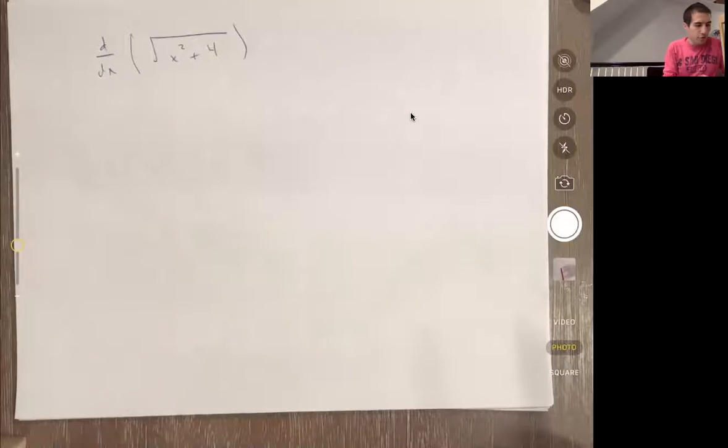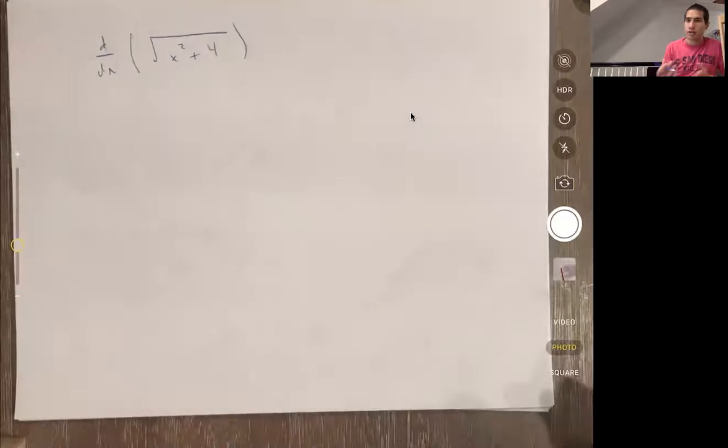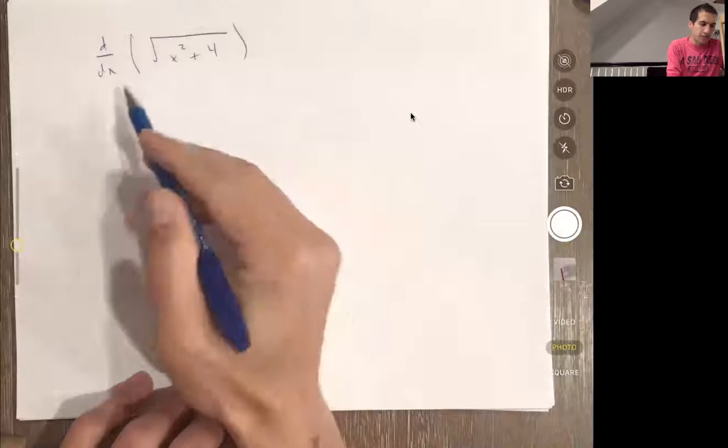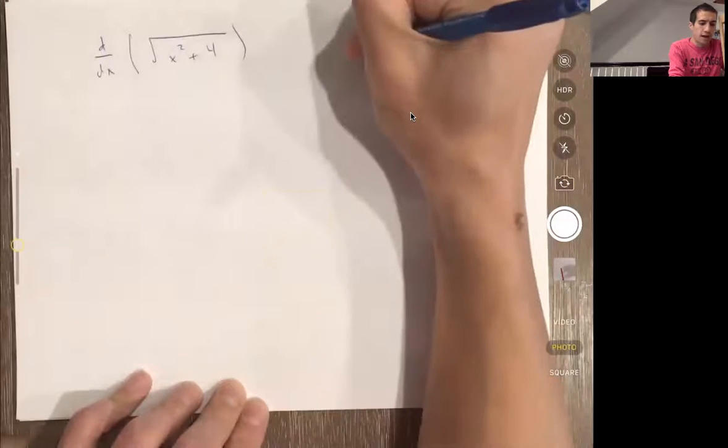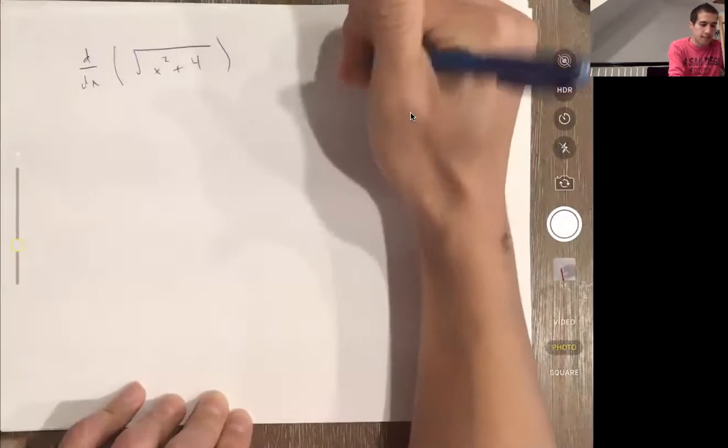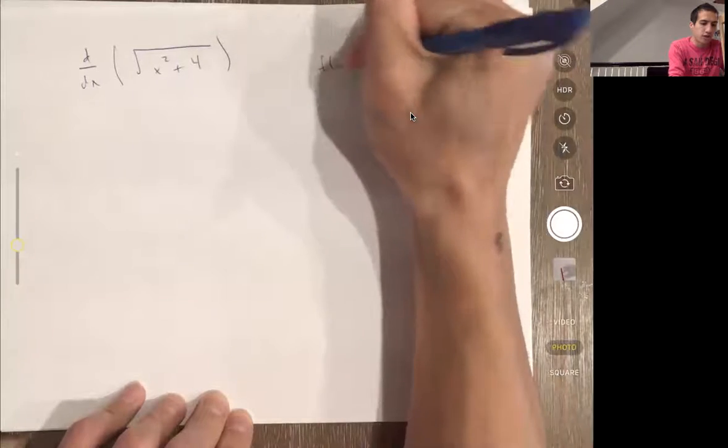I want to do an example of the chain rule. This is the example from the last video, so I'm going to take the derivative now. This is a composition of functions, so when you're getting used to doing this, it's helpful to write out what the functions are.